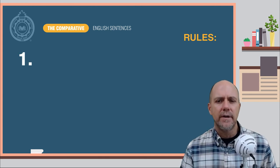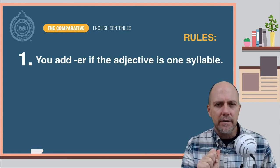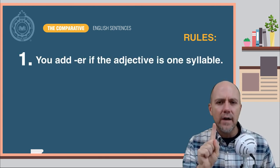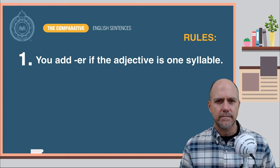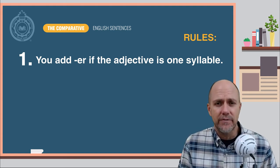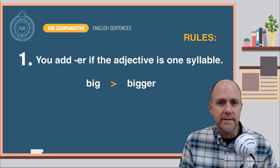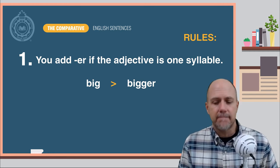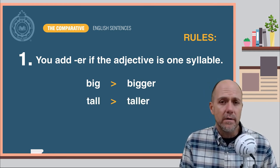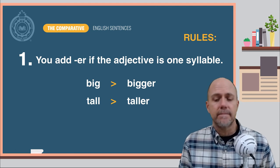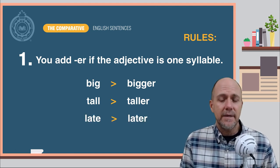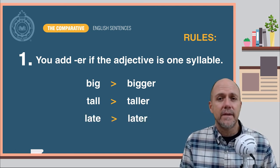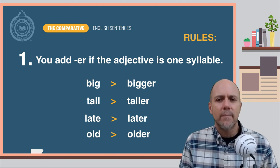Rule number one: You add -er if the adjective is one syllable. Here are some examples: big becomes bigger, tall becomes taller, late becomes later, old becomes older.